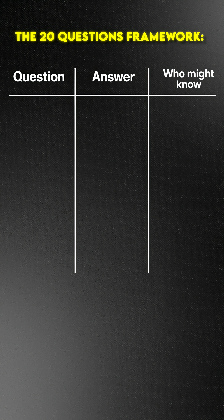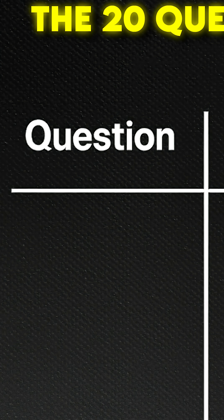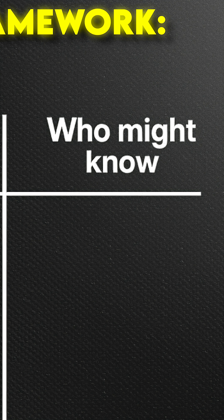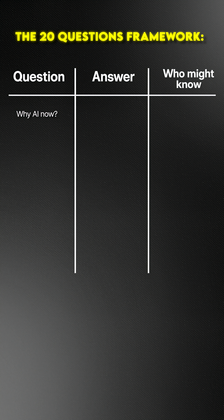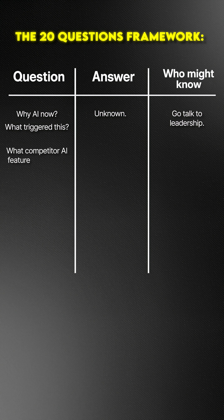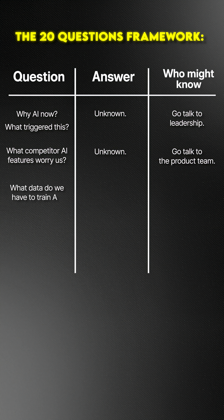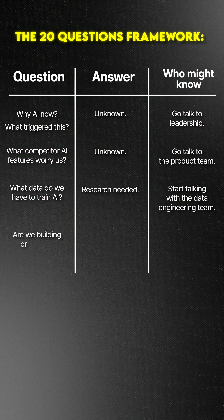All you have to do is create three columns: the question, the answer, and who might know. Start listing every question that comes into your head. Why AI now? What triggered this? Answer unknown — go ask leadership. What competitor AI features worry us? Answer unknown — go talk to the product team. What data do we actually have to train AI? Research needed — start talking with the data engineering team. Are we building or buying? Answer unknown — ask the CTO once we have some product direction.